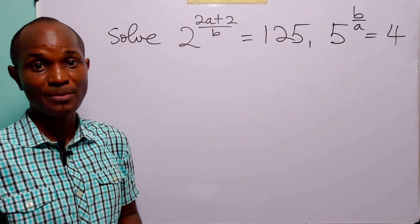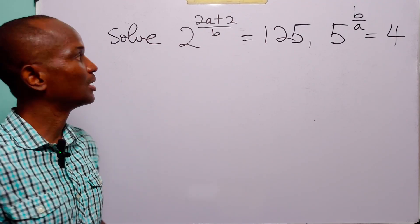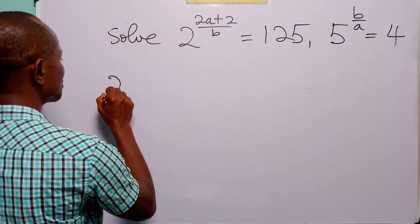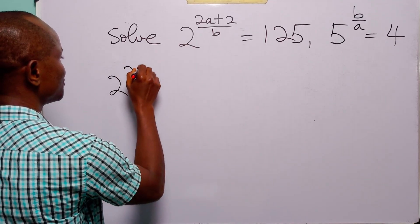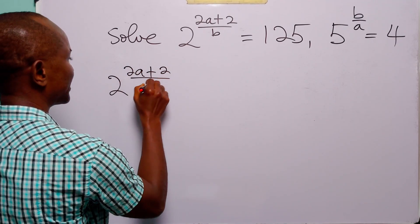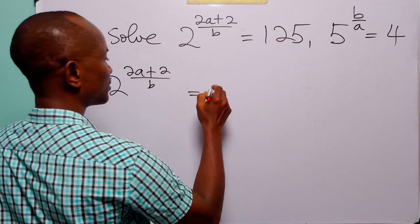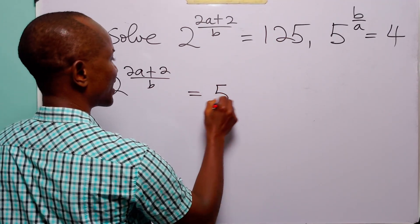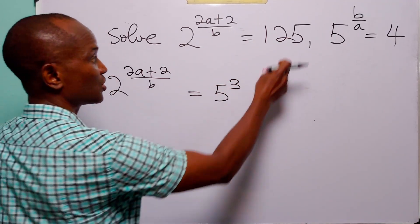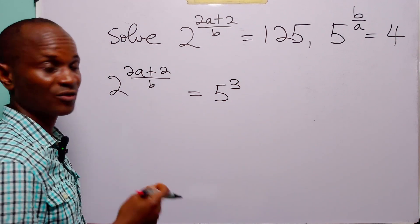To solve this problem, we are going to start with the first equation. On the left-hand side, we have 2 to the power (2A + 2)/B, and this is equal to 5 to the power 3, because 125 is equal to 5 cubed.